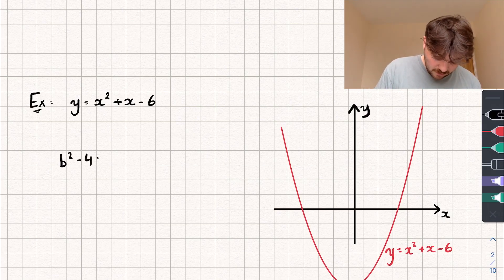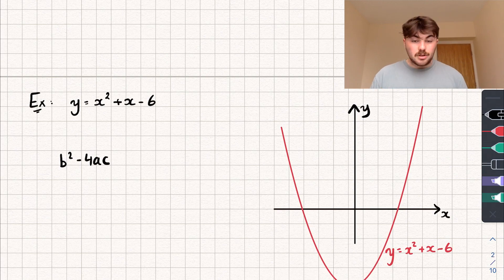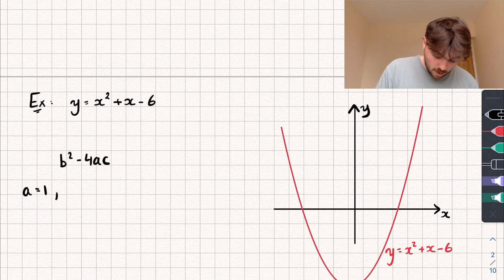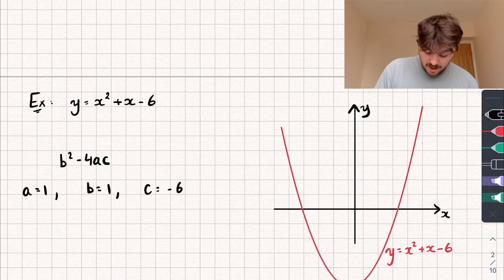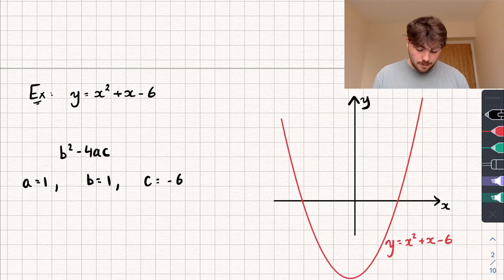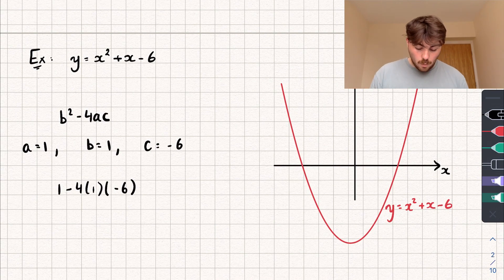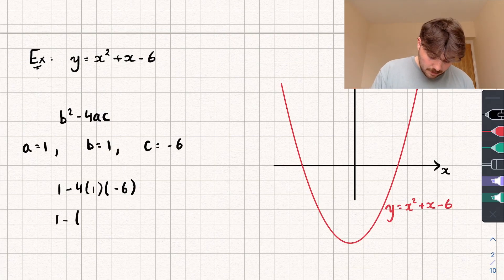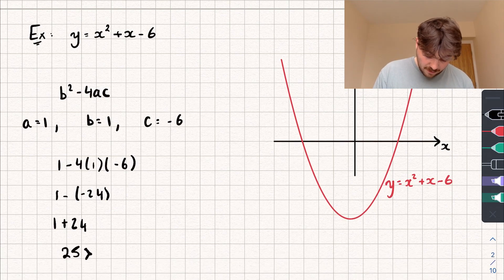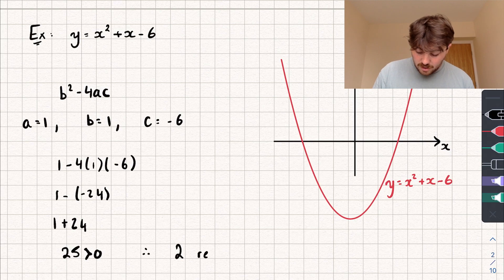The discriminant is b squared minus 4 times a times c. Our value of a is the coefficient of x squared, so it's 1. Our value of b is the coefficient of x, so that's also 1. And our constant c on the end is negative 6. So inputting that in: b squared is 1 squared minus 4 times 1 times negative 6. That gives us 1 subtract 4 times 1 times negative 6, which is negative 24. So we've got 1 subtract negative 24, which is the same as 1 plus 24, which gives us 25. And 25 is greater than 0, so therefore there are two real roots — and you can see from the graph that makes sense.